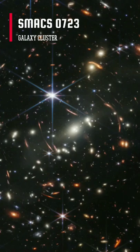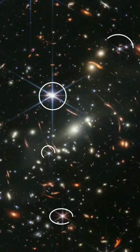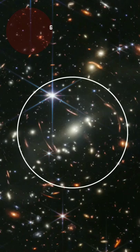It is the image of SMAX 0723, a galaxy cluster which is 4.6 billion light-years away from us. As you can see, the dots of light with spikes are stars, while the other smudges are galaxies.